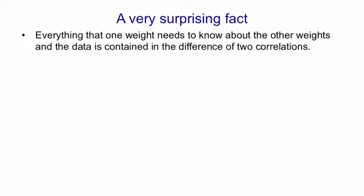So given that one weight needs to know about other weights in order to be able to change even in the right direction, it's very surprising that there's a very simple learning algorithm, and that the learning algorithm only requires local information. So it turns out that everything that one weight needs to know about all the other weights and about the data is contained in the difference of two correlations.